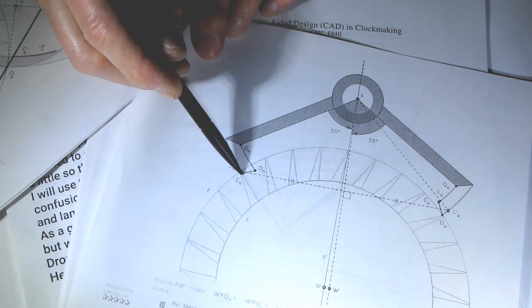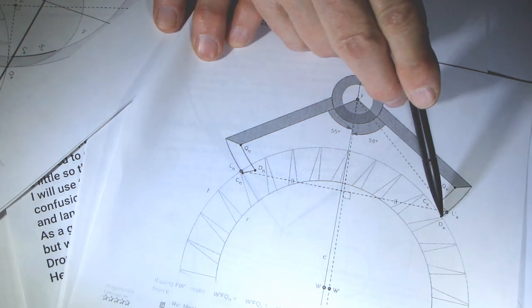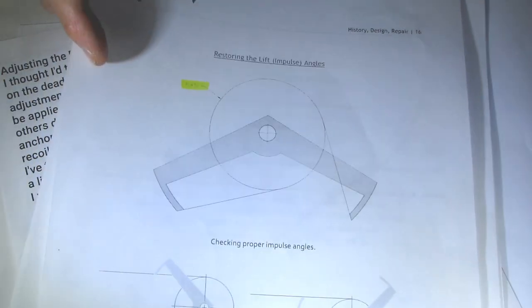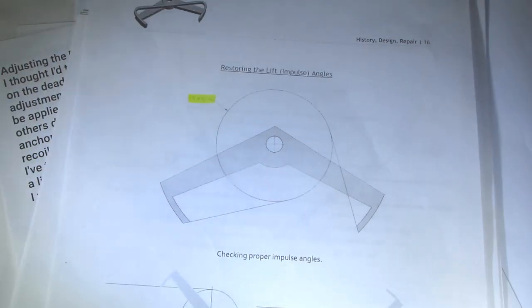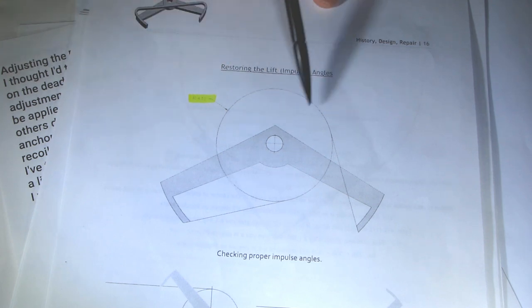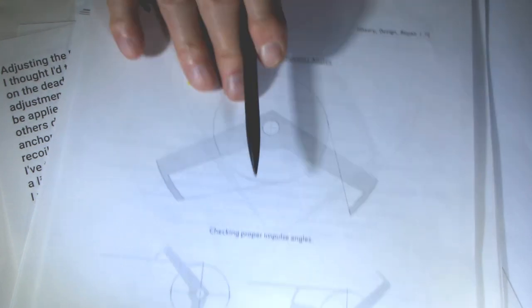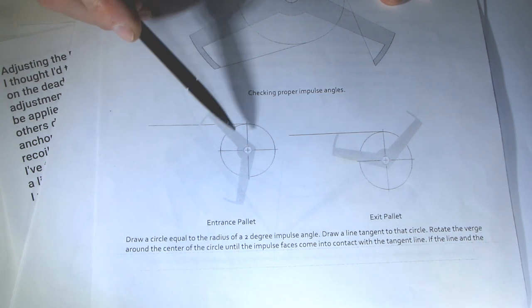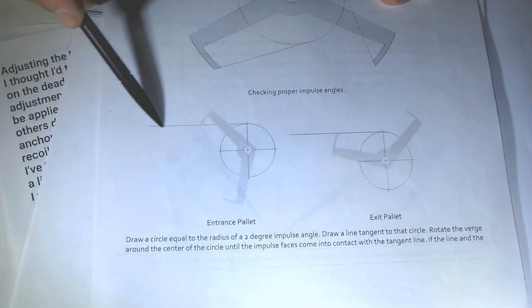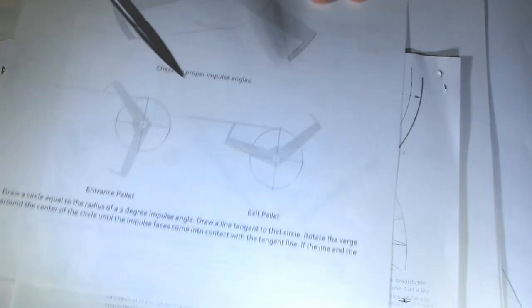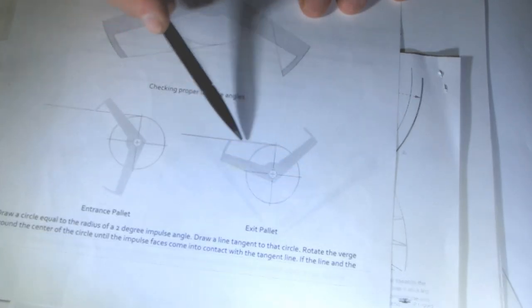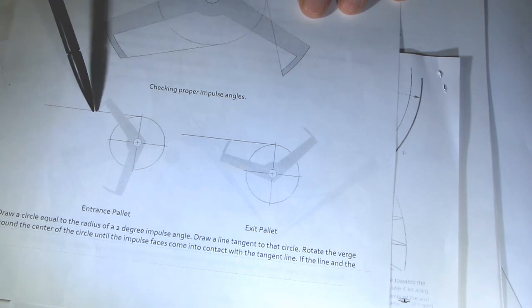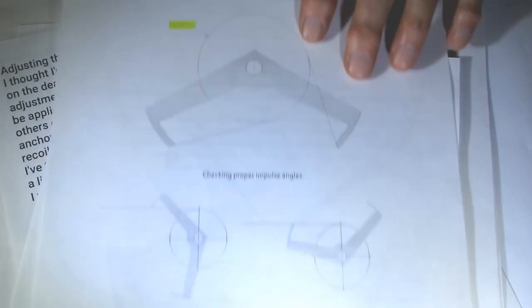After I finished the job of adjusting impulse faces and published the previous video, I thought about that topic more and I decided to come up with a jig that would be more universal and convenient to use than the one I used for my first experiment. This drawing is the key in my understanding of how to define the right lift angles of both entry and exit impulse faces.